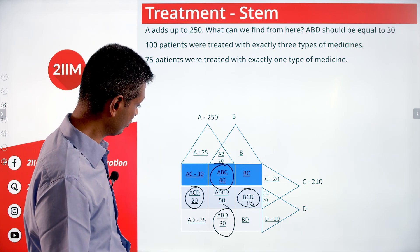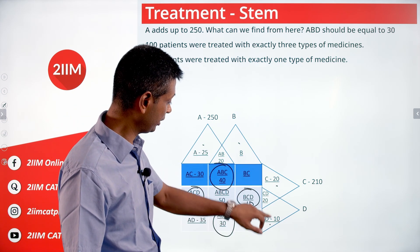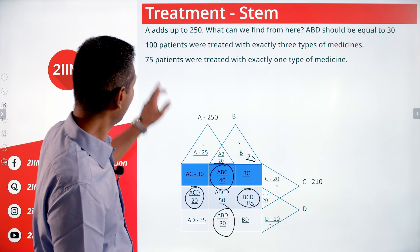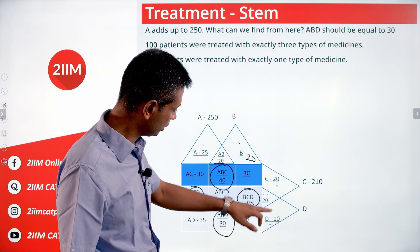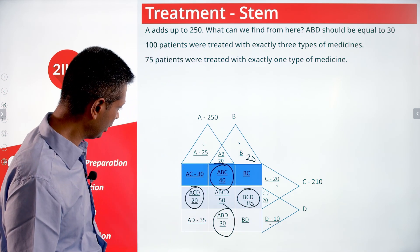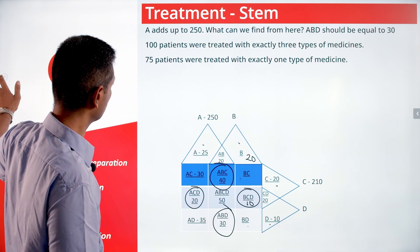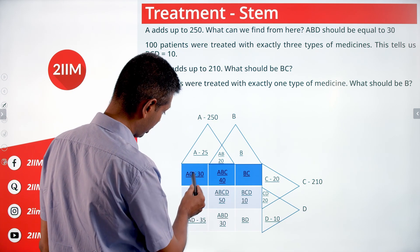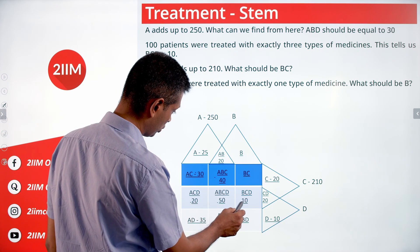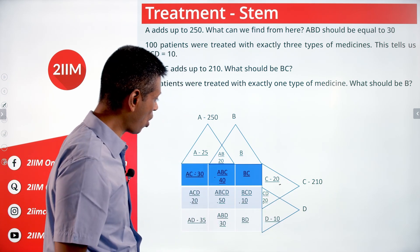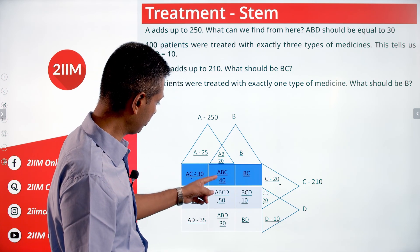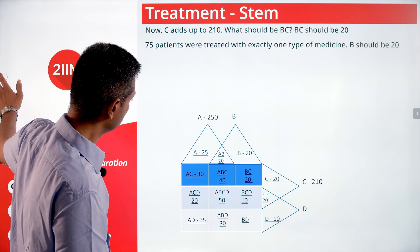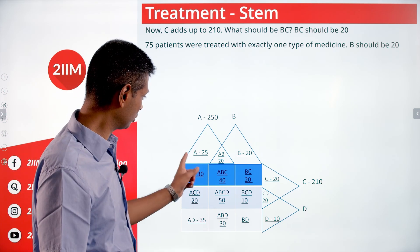75 patients were treated with exactly one type of medicine. The exactly-one regions are: A only (25), C only (20), D only (10), and B only (unknown). 25 + 20 + 10 = 55, so B only = 20. That confirms B only = 20. Using the C total of 210: summing all C regions — 30 + 20 + 40 + 20 + 10 + 50 + 20 — gives 190, so the remaining C region (B∩C only) = 20.